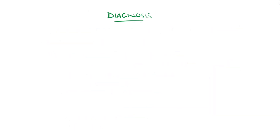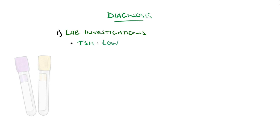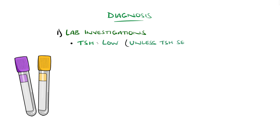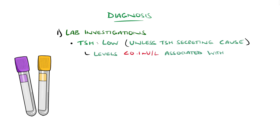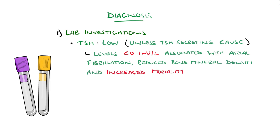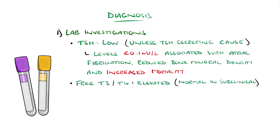Diagnosis involves lab tests including TSH, which is typically low unless the hyperthyroidism is due to a TSH-secreting source. Levels below 0.1 milli-international units per litre are associated with atrial fibrillation, reduced bone mineral density, and increased mortality. Free T4 and T3 levels are typically elevated, though subclinical cases may have normal thyroid hormones. This is much less common than subclinical hypothyroidism.